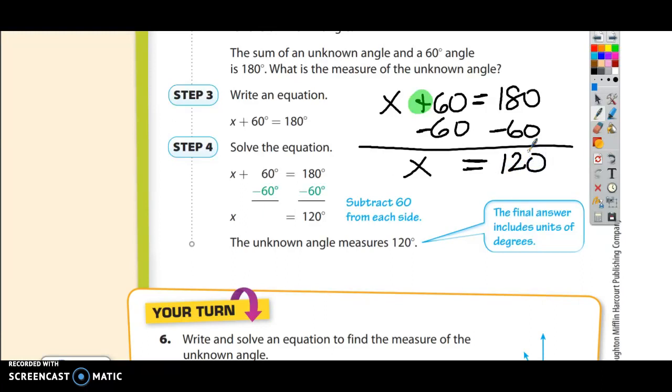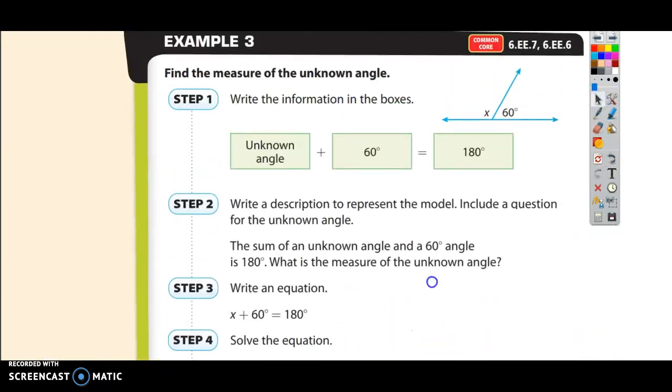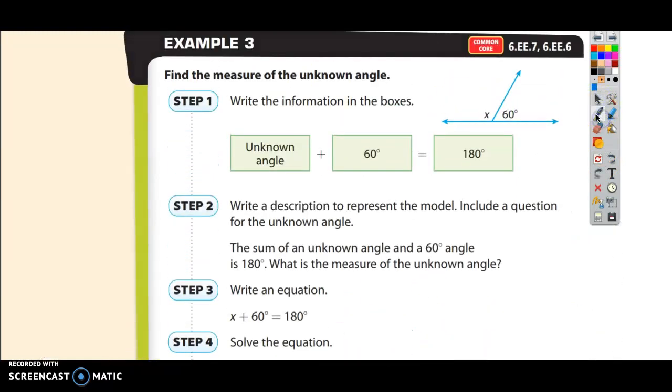And that should make sense because if you go back up to the picture, if I put 120 in right here, 60 plus 120 has a sum of 180. That's what that has to be to make the whole statement true. Those two angles are supplementary because supplementary means they add up to 180 degrees.